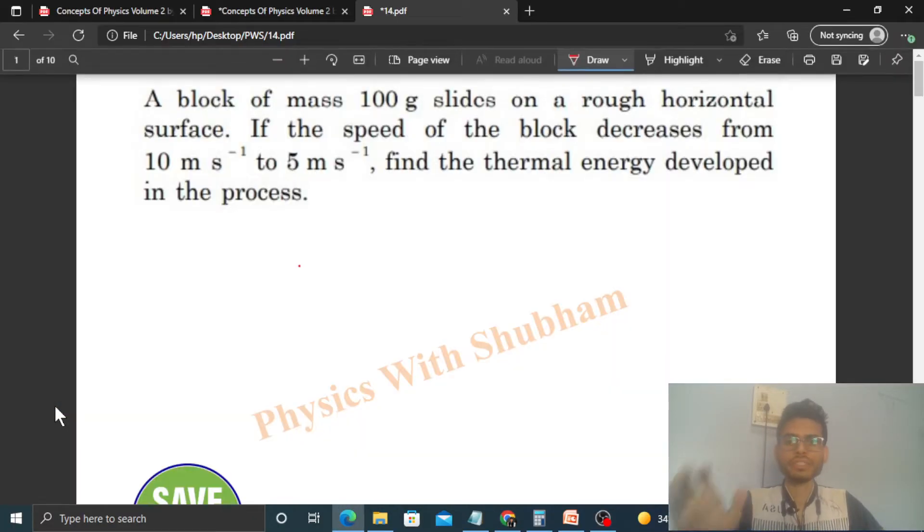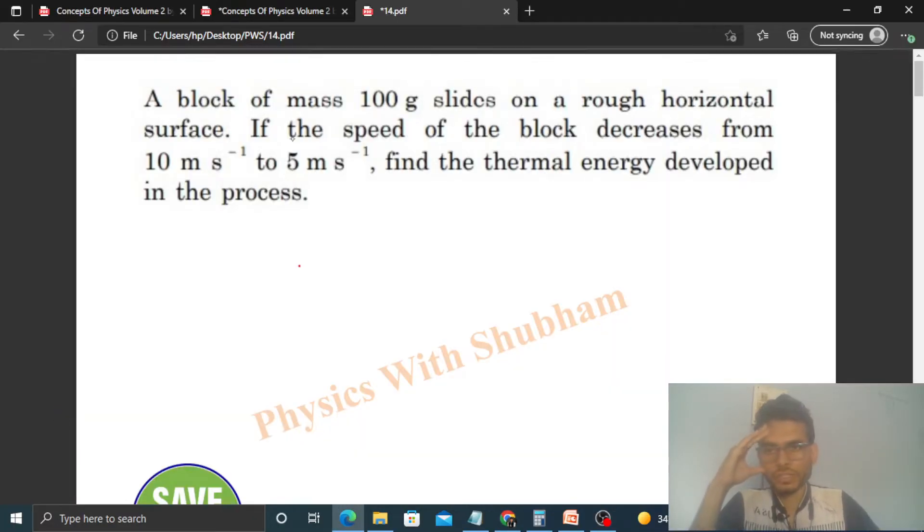Okay, hi everyone. Today let's discuss one interesting problem. It says a block of mass 100 grams slides on a rough horizontal surface. If the speed of the block decreases from 10 to 5 meters per second, find the thermal energy developed in the process.